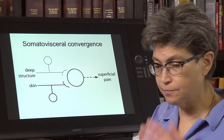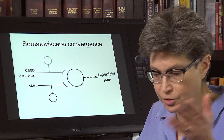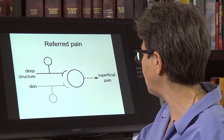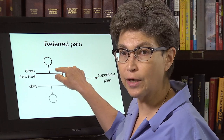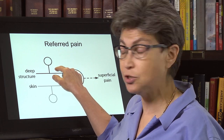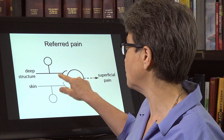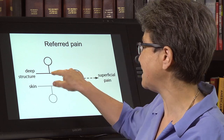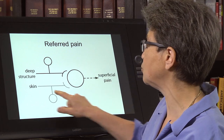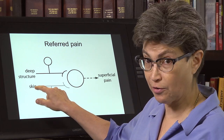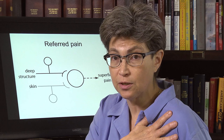So when this central neuron fires, it will be interpreted as pain to, let's say, the shoulder. Now what happens is you're 60 years old, and all of a sudden the cardiac muscle is, in fact, damaged and it starts to fire. Well, that firing will be referred to where this cell was hooked up to — which is this area of skin — so it'll be referred to the shoulder.